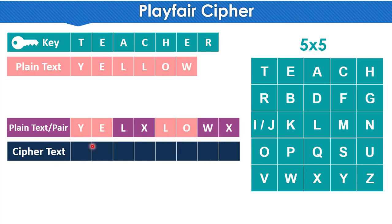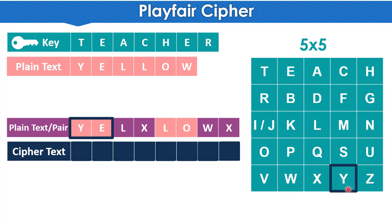Now we will convert these pairs into ciphertext. There are rules for this. Let's take the first pair Y and E. In the table, Y is located here and E is located here. The rule is: if the two alphabets of a pair are neither in the same row nor in the same column, then we form a rectangle using those two letters as corners.